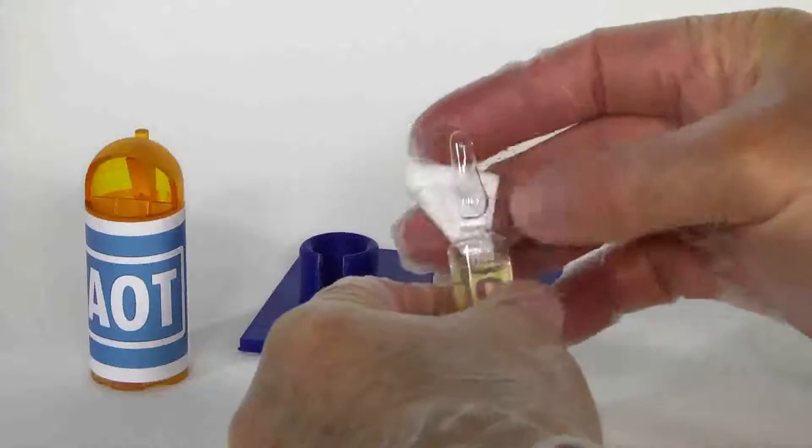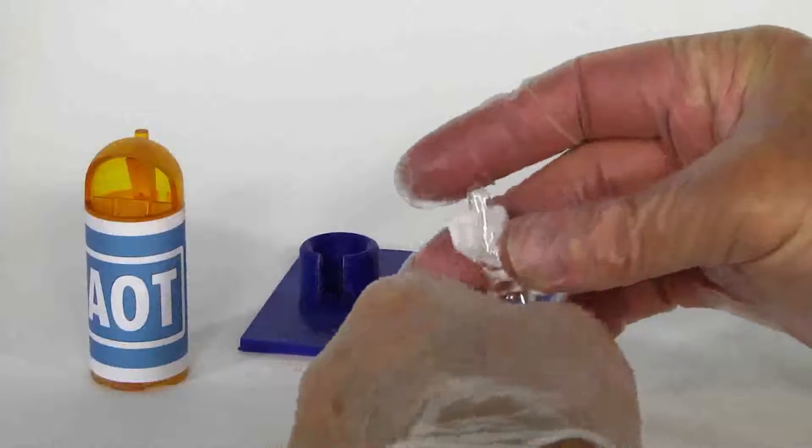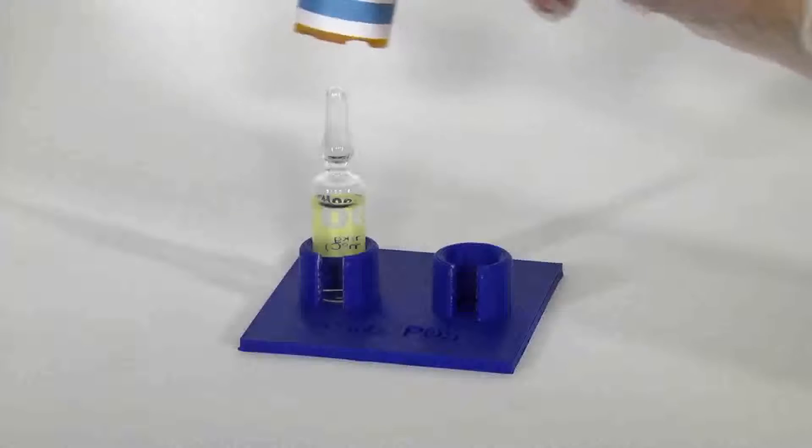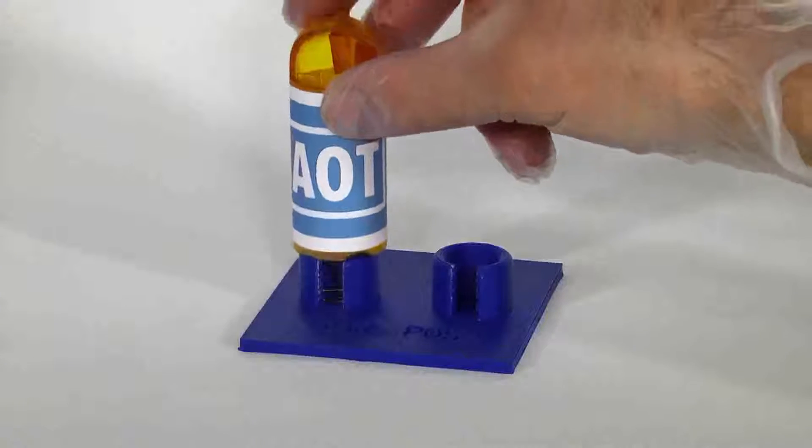If it is sized correctly, then clean your ampule and place it in the base. Slide AOT opener over and down on the ampule until there is a slight resistance felt.